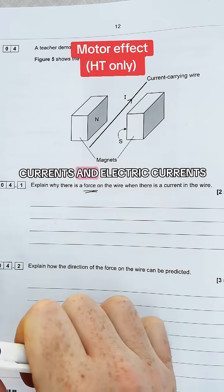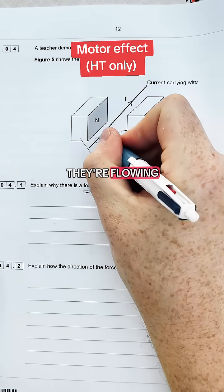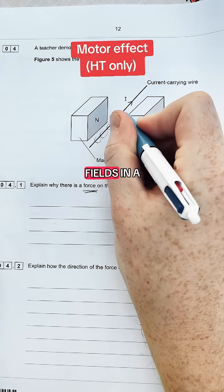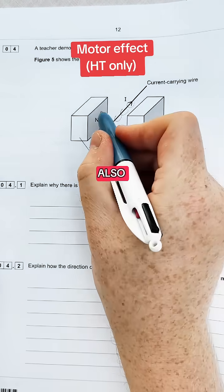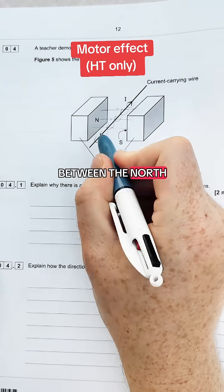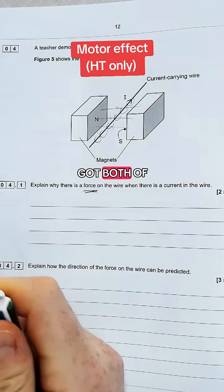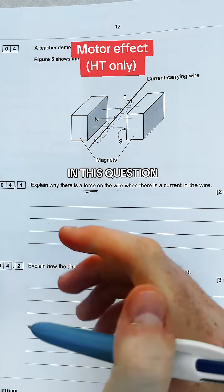One thing we need to know about currents and electric currents is that when they're flowing there are these tiny little magnetic fields in a circular pattern around them. Now that is also in addition to the magnetic field between the north and the south pole. So we've got to talk about both of those things to be able to get our marks in this question.